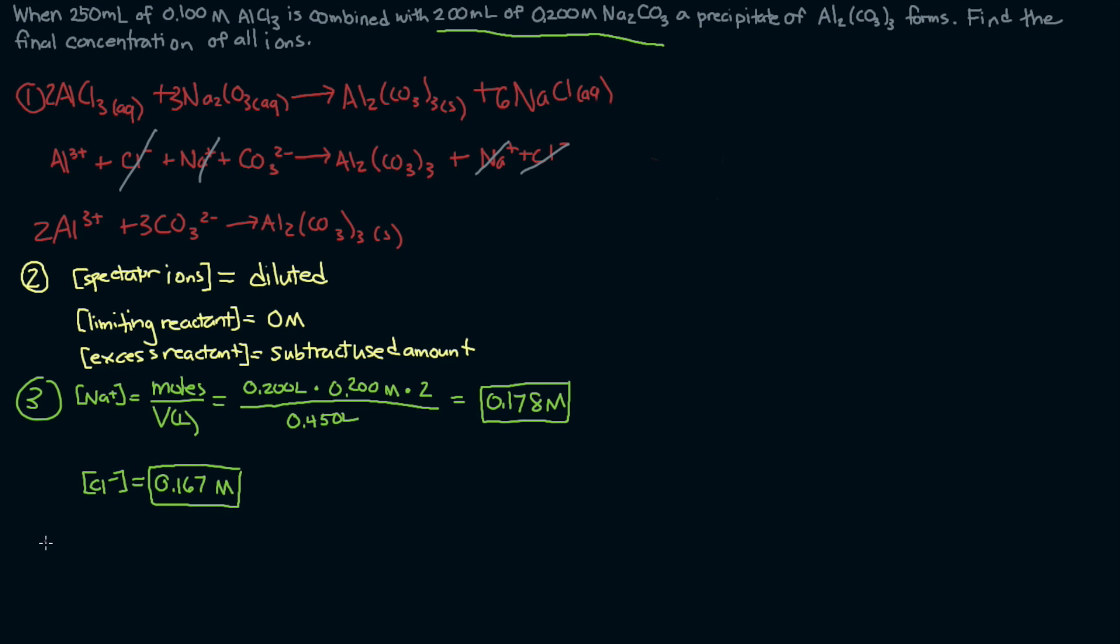The next step is finding the limiting reactant, and we're going to save some time and jump to the answer here. The limiting reactant in this particular problem will end up being, remember, this is the limiting reactant of the formation of the precipitate, and the limiting reactant will end up being the aluminum.